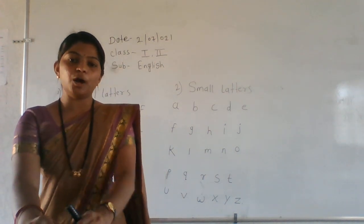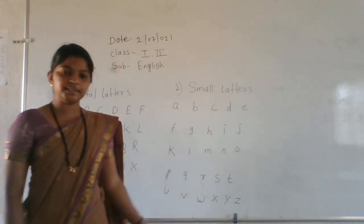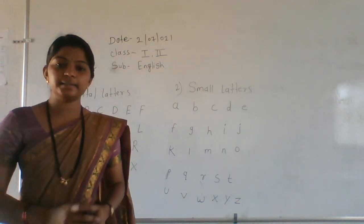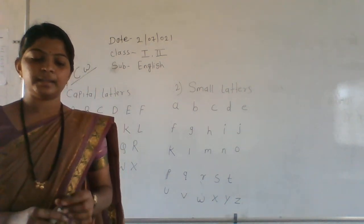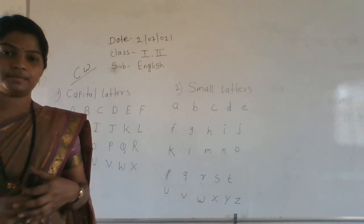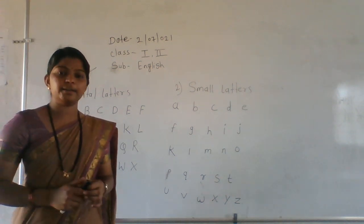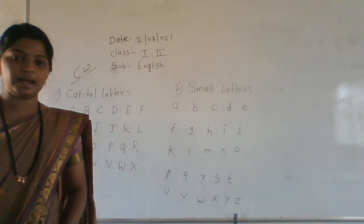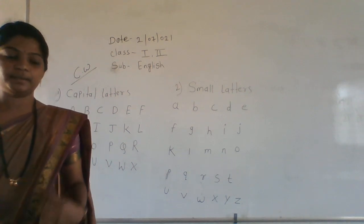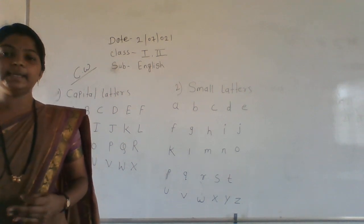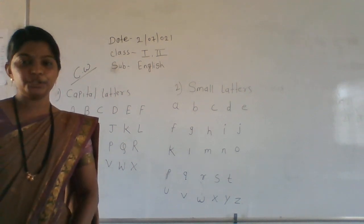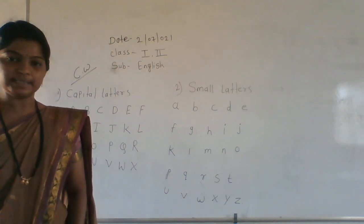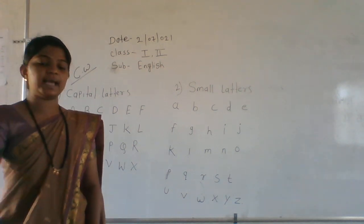Now, how many vowels in your English alphabets, English letters? Tell me. How many vowels? Five vowels. Five vowels in our English alphabet: A, E, I, O, U. There are five vowels in our English alphabet.